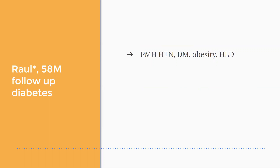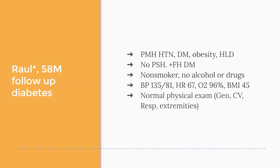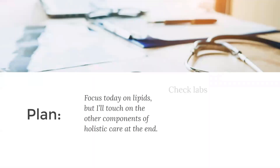His past medical history includes hypertension, obesity, diabetes, and hyperlipidemia. He hadn't had any surgeries, but his brother has diabetes. He's a non-smoker with no alcohol or drug use. His blood pressure was good at 135/81, heart rate 67, oxygen 96%, but his BMI was quite high at 45. He had a normal physical exam overall aside from obesity — normal heart, lung sounds, cardiovascular, respiratory, and extremity exam. The plan today focuses on lipids, but I'll touch on other components of his care at the end.